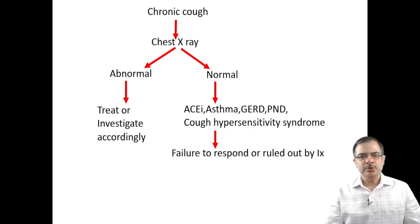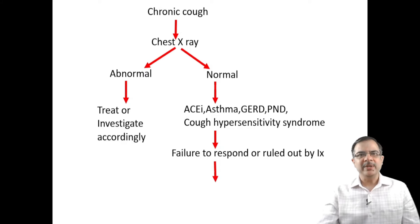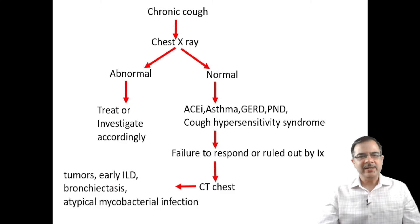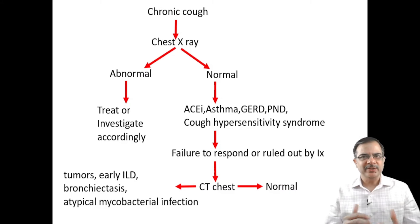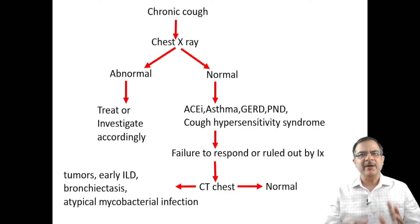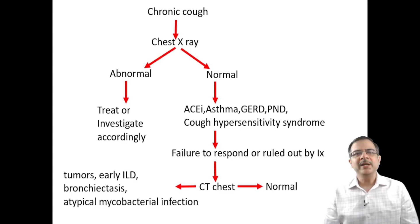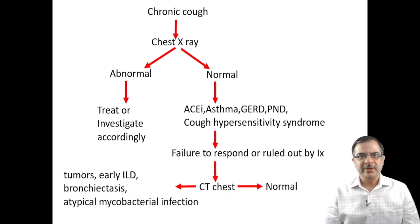If there is failure to respond or etiologies cannot be ruled out by investigations, the next step is a CT scan, which can reveal early-stage tumors, early ILD, bronchiectasis, or atypical mycobacterium infections. If the CT chest is also normal, reassure the patient and provide symptomatic treatment, as this may be a self-limiting benign condition.